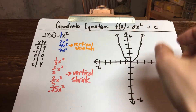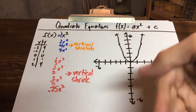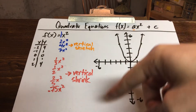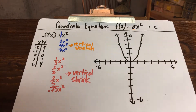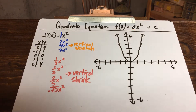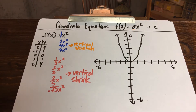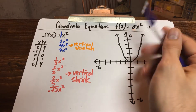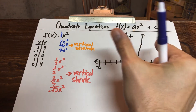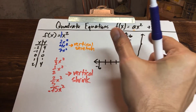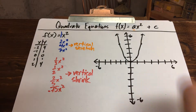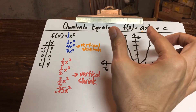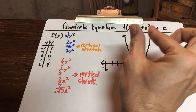If the number was a negative, it would take the whole thing and flip it upside down — a reflection of the original. So long story short: whenever you change the letter a, you're changing the width or narrowness of the graph. You're going to either open it up or push it in together.